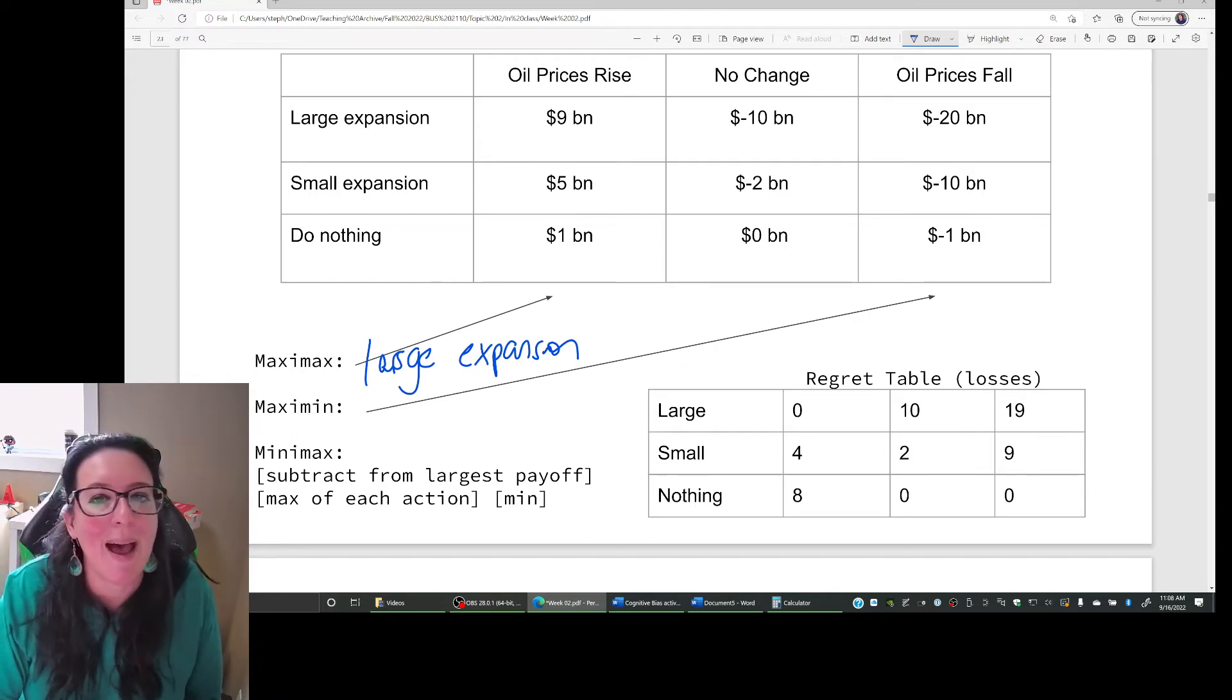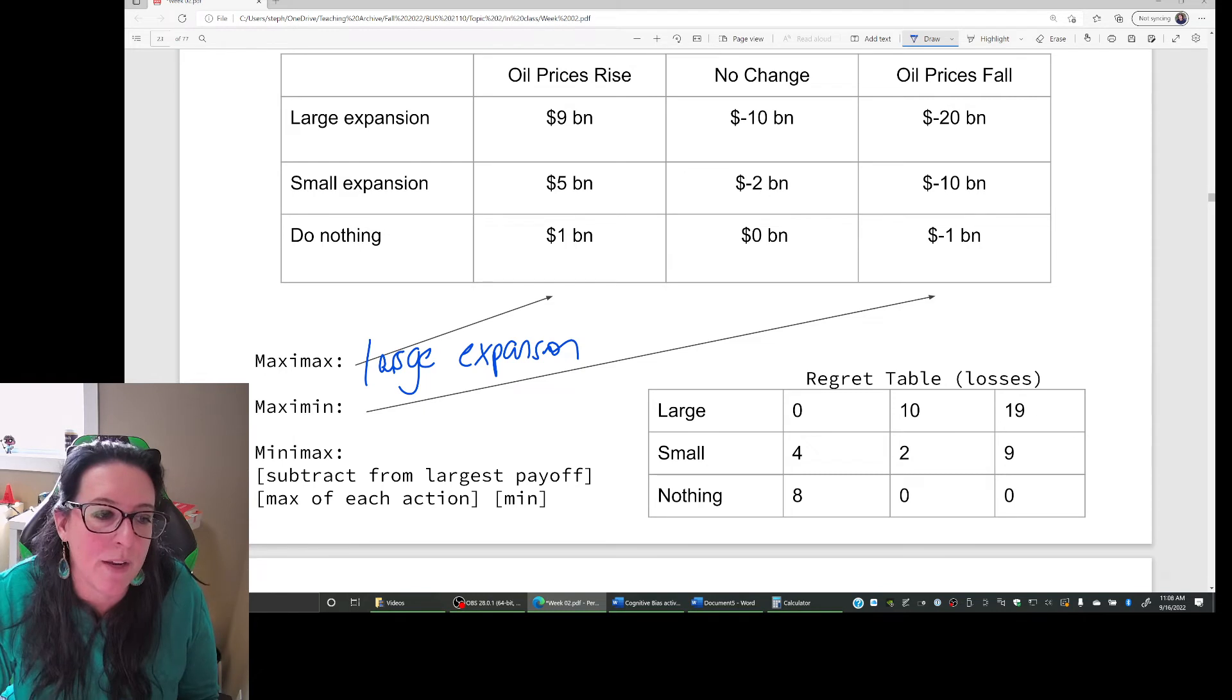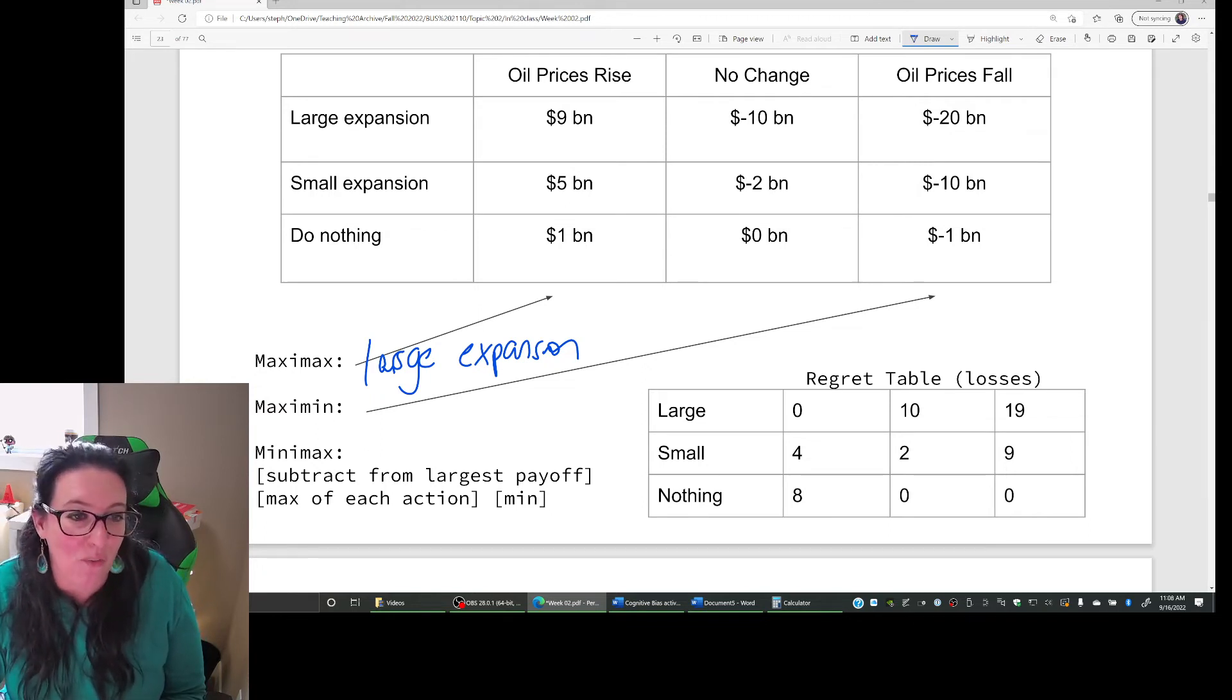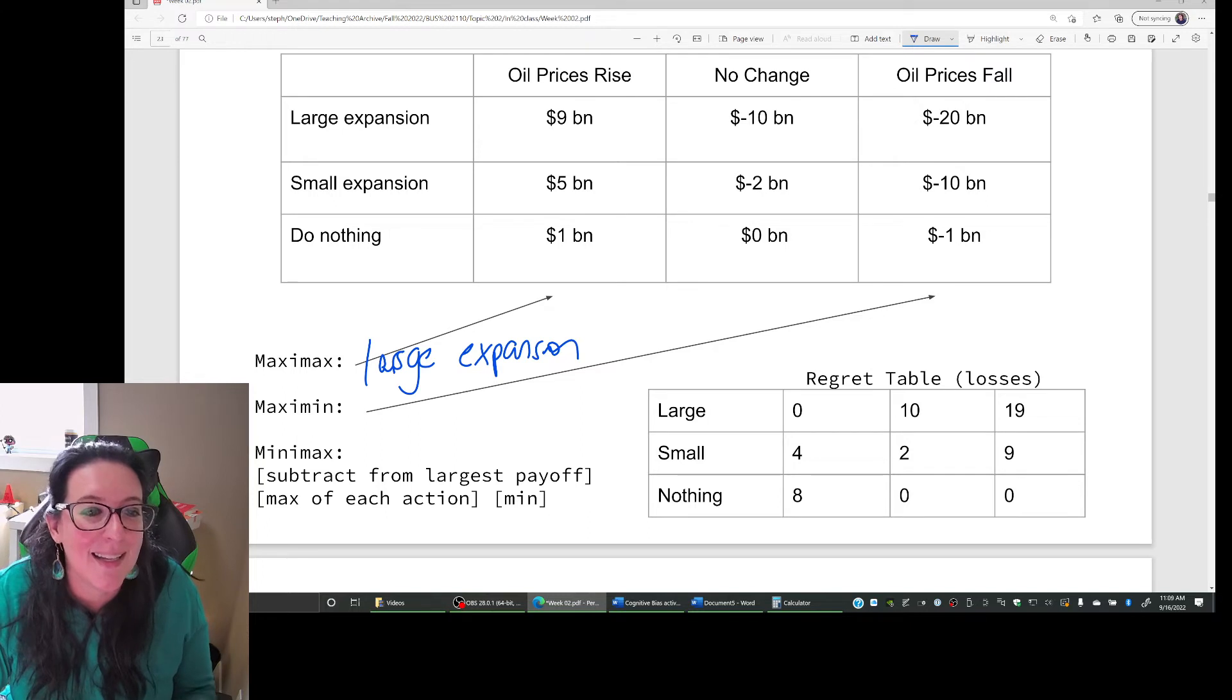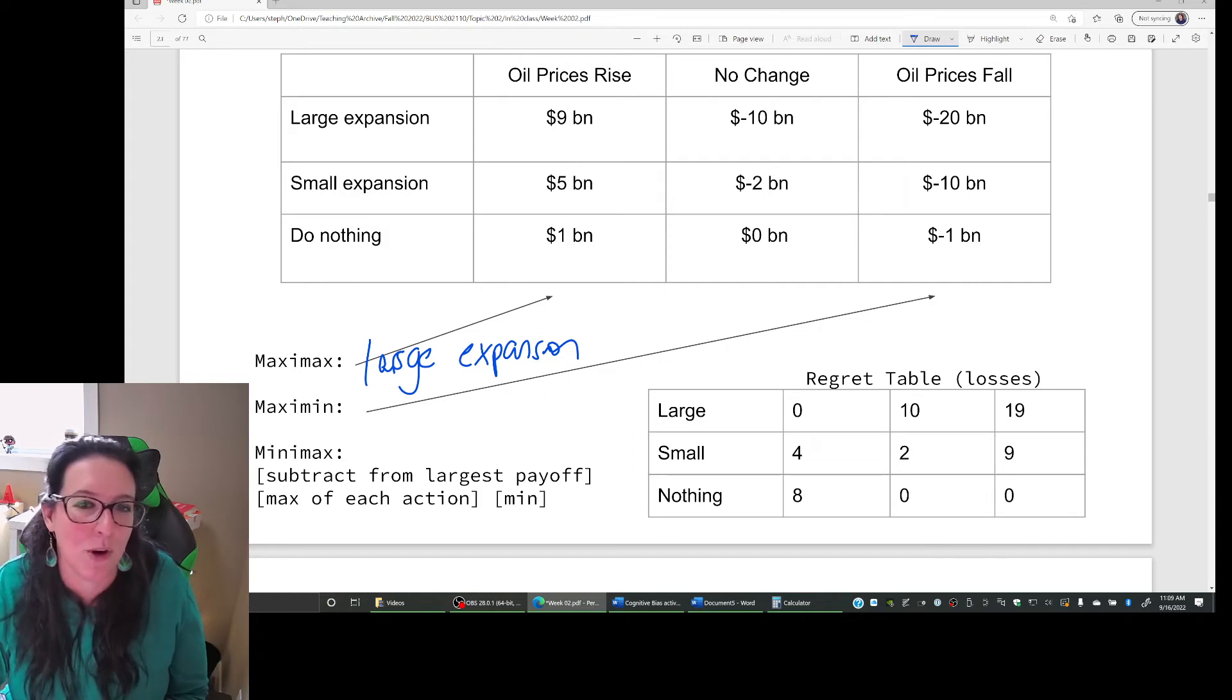In comparison, MaxiMin, right? We take that very conservative approach. We are pessimistic about the outcome. And so we say, okay, worst case scenario. Worst case scenario, prices fall. What is the best option for us? How do we maximize the benefit to us given this minimum or worst case scenario?